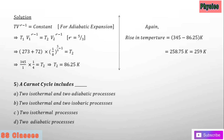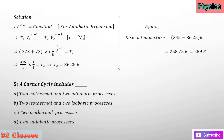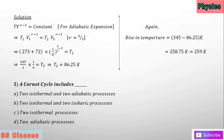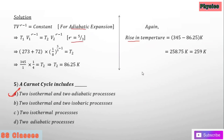The rise in temperature equals 345 Kelvin minus 86.25 Kelvin equals 258.75 K, approximately 259 Kelvin. A Carnot cycle includes two isothermal and two adiabatic processes — that is the answer.